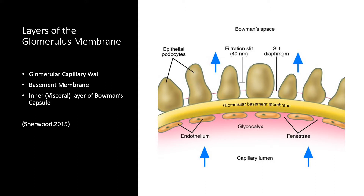The basement membrane is an acellular gelatinous layer composed of collagen and glycoproteins, sandwiched between the glomerulus and Bowman's capsule. The collagen provides structural strength and glycoproteins discourage the filtration of small plasma proteins. The large plasma proteins cannot be filtered because they cannot fit through the capillary pores, but the pores are just barely large enough to prevent passage of albumin, the smallest of plasma proteins.